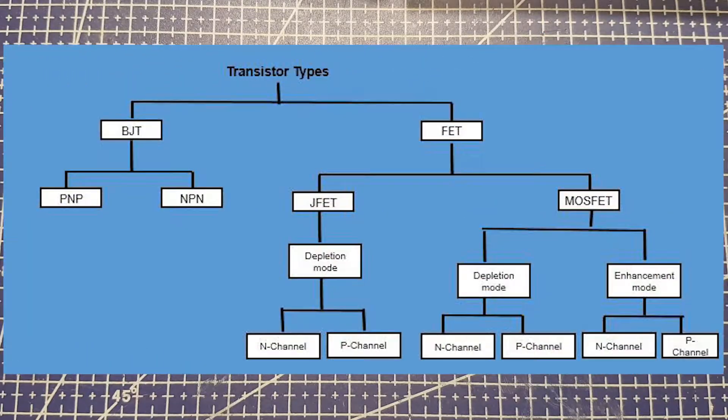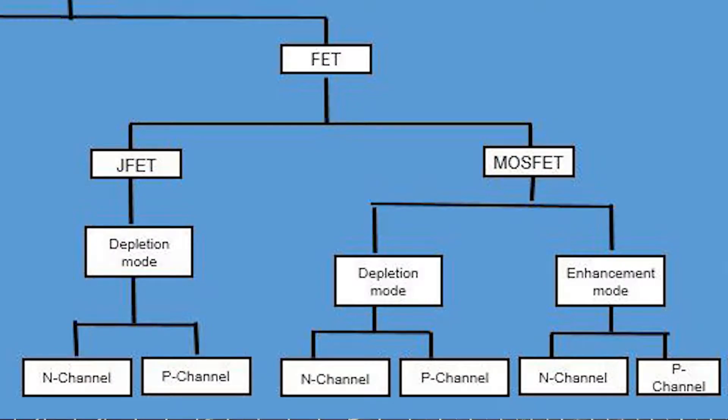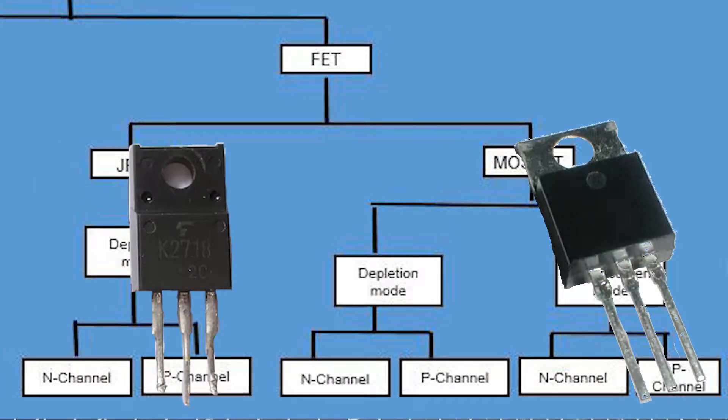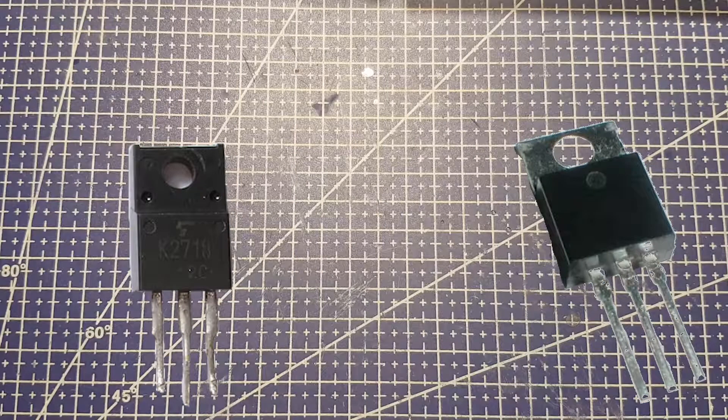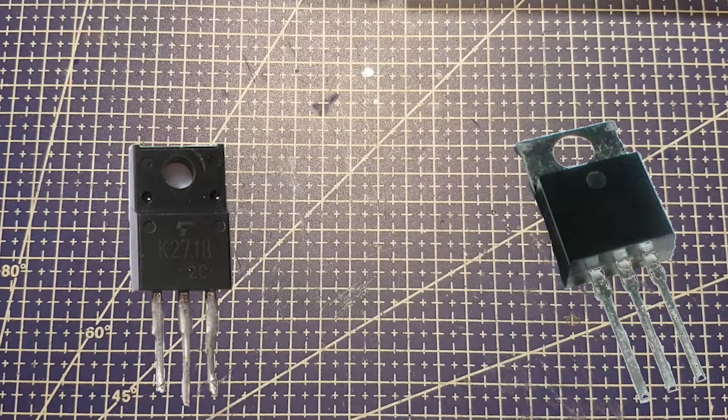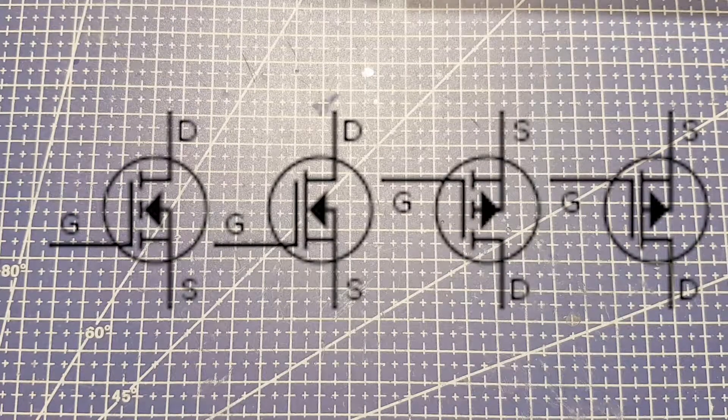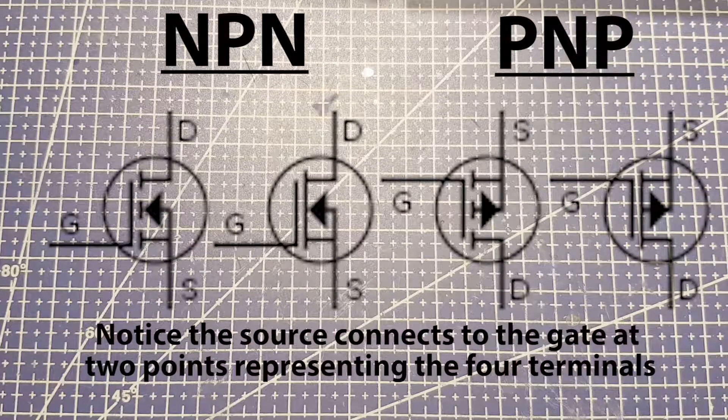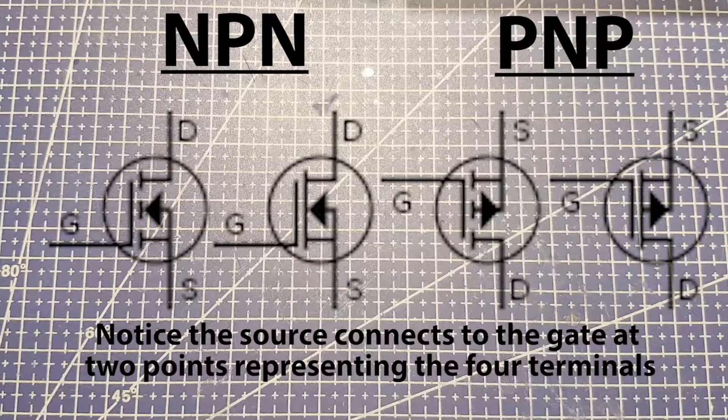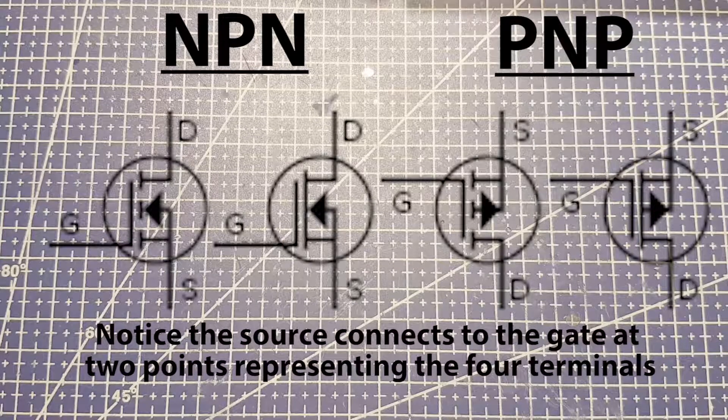Which is slightly different from the other types of transistors. Now the FET transistors stands for field effect transistor. There are two different types. A junction field effect transistor and a metal oxide semiconductor field effect transistor. Now when you're just getting started, the MOSFETs will probably be the most common FET that you will use. They actually have four terminals. But normally the fourth terminal is connected internally in the body of the transistor. So you don't have to worry about that.